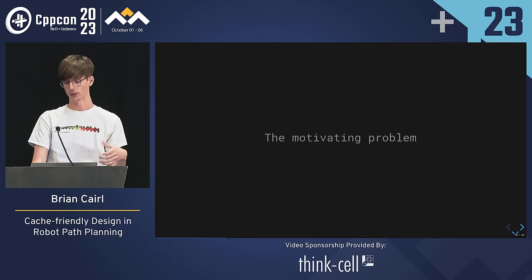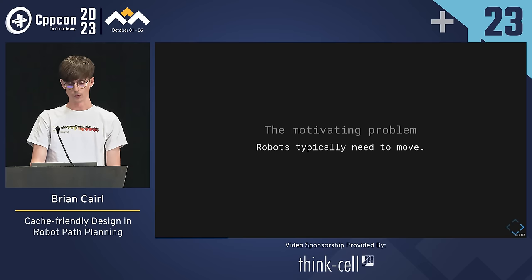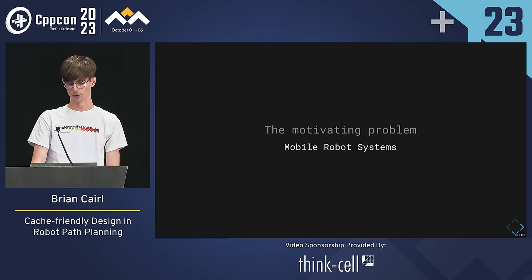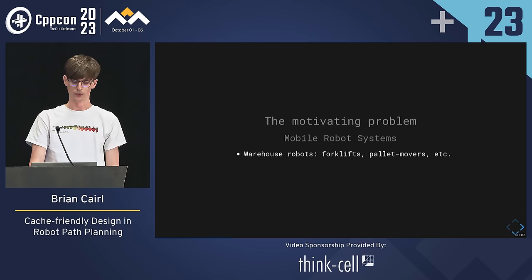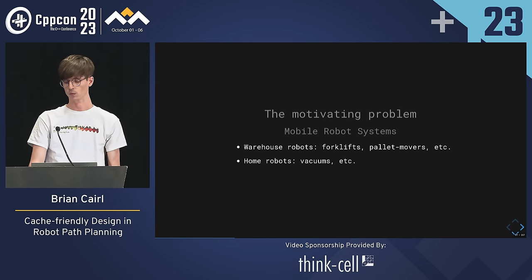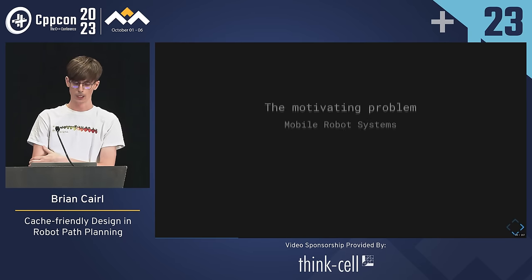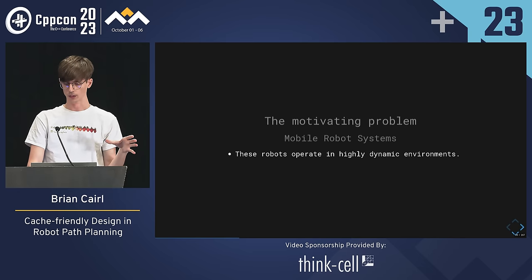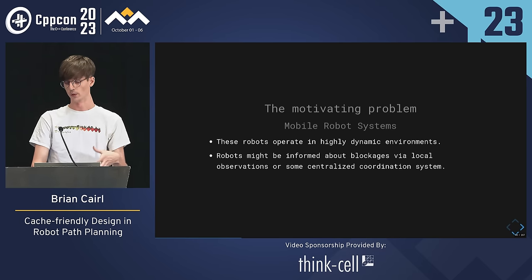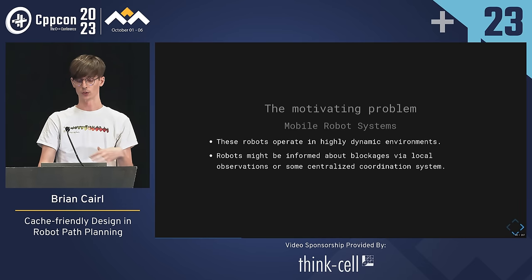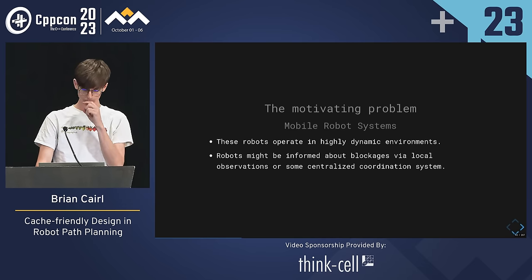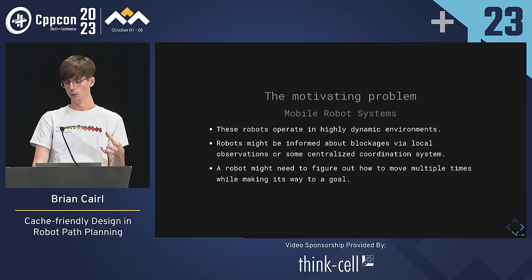To begin with an implementation journey, let's focus on a motivating problem: we want our robots to move. Let's focus on mobile robot systems — mobile meaning they should definitely move — and specifically on robots that can pretend they live in a 2D world, like autonomous forklifts moving pallets, home robots moving room to room, or outdoor robots like tractors, berry pickers, or delivery systems. Even though these robots operate in a low-dimensional space, moving is hard because the environment is chaotic. They might experience blockages from direct observations, from a central coordinating system, or from information shared between robots, so they need to be reactive with how they come up with new plans.